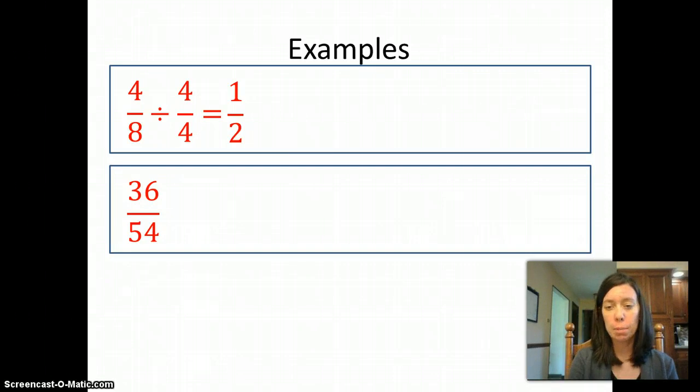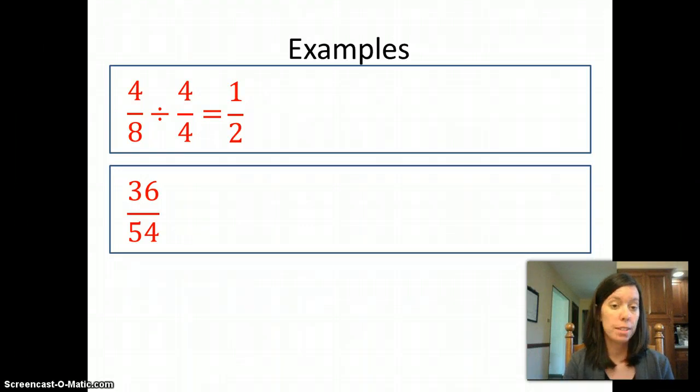Now let's look at one that's a little bit tougher, 36 over 54. I have to find a number that goes into both. And there are a lot of numbers that go into 36 and 54. So depending on which number I pick, I'm going to get a different result. So how do I know that I'll be in lowest terms?